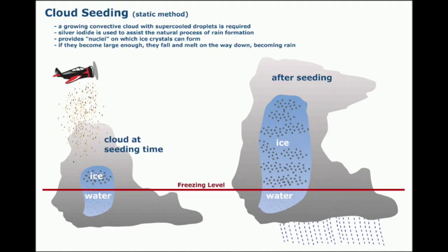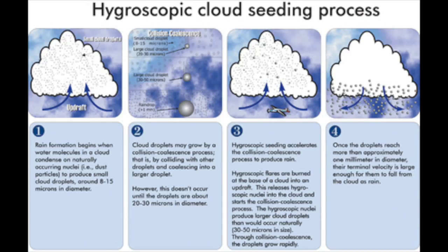Dynamic cloud seeding increases vertical air movements, which make more water pass through clouds, meaning more crystals and therefore more rain. It requires a properly working sequence of events and is less dependable than the static method. Hygroscopic cloud seeding releases salts into the lower sections of clouds. The salts absorb water until they are fully saturated and can no longer absorb any more water, and it rains. This is the least studied method, but is thought to have the highest potential.